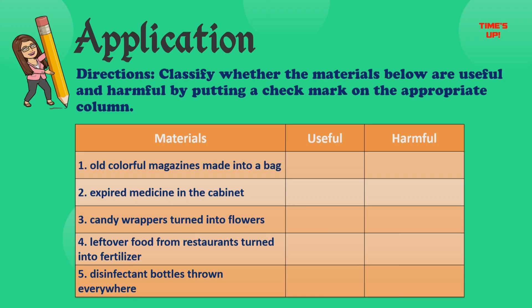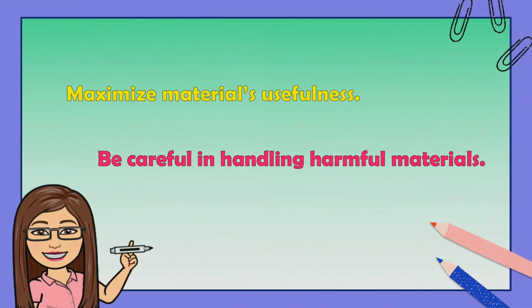Time's up! Let's check your work. Number one — the answer is useful. Number two — the answer is harmful. Number three — the answer is useful. Number four — the answer is useful. And number five — the answer is harmful. Do you get the perfect score? Very good! This is your science teacher reminding you all to maximize materials' usefulness and be careful in handling harmful materials. That's all for today. See you on our next discussion. Have a nice day!